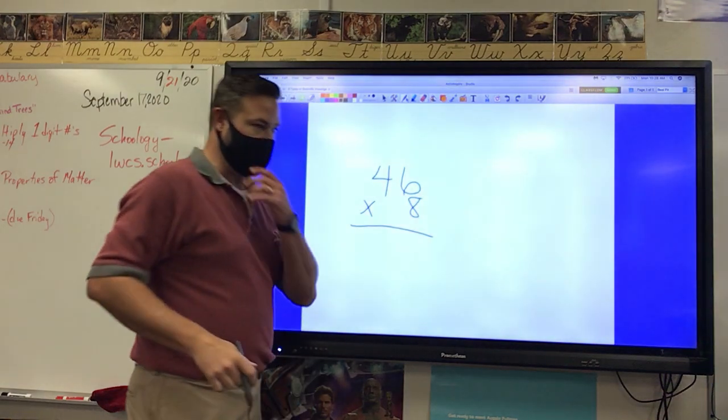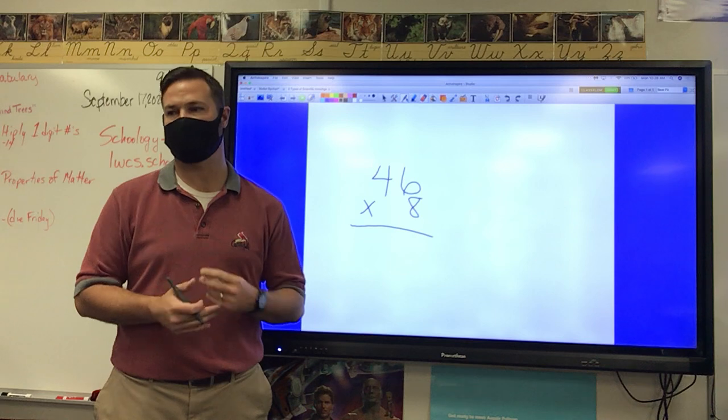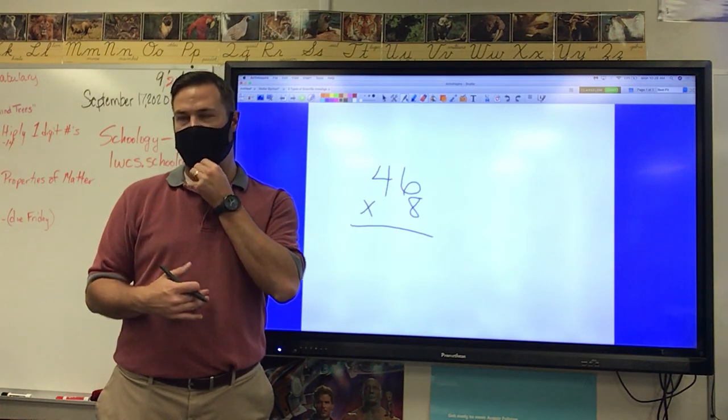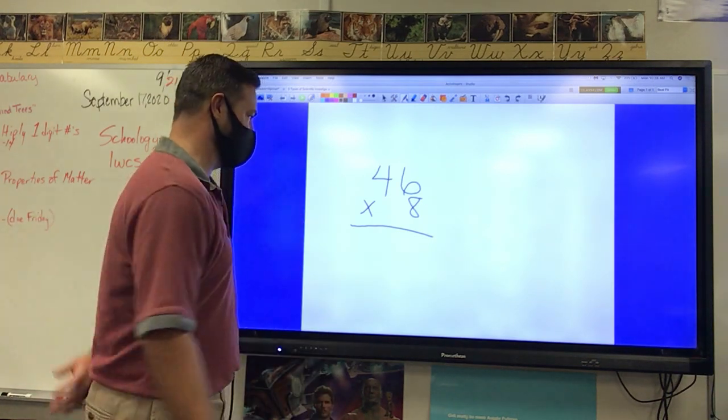Now, to multiply this out, what would you multiply first? What do you think you're gonna multiply first? Right, 6 times 8. And what is 6 times 8? Thank you, one of you are with me. Alright, perfect. 48.